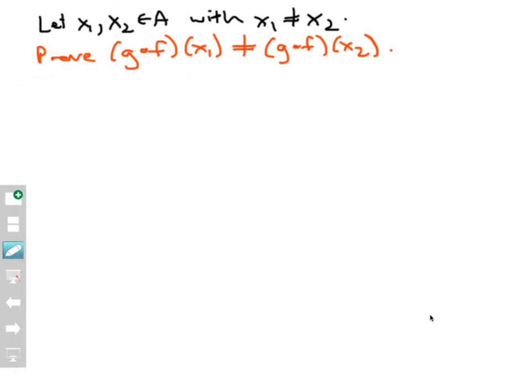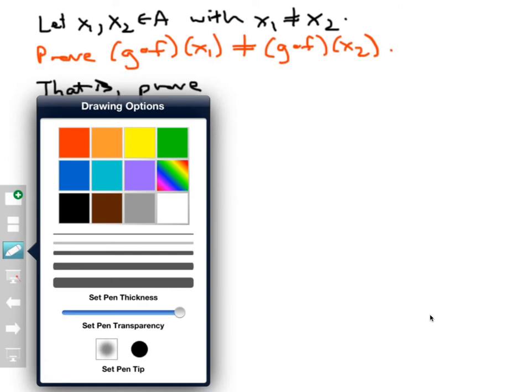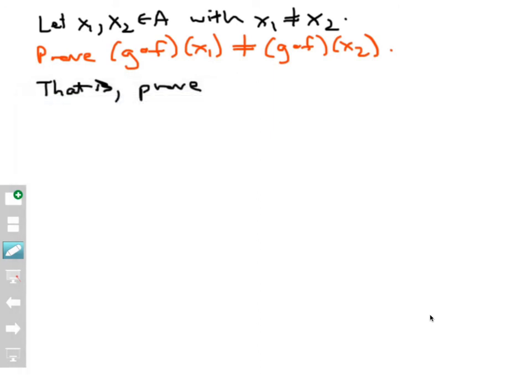Okay, one thing that we could possibly do here is sort of a backward step. So what does this stuff here actually mean? So I can interpret that to say that is, I want to prove, switch over to red again, what is g compose f of x1? That is the same thing as g of f of x1, and I want to show that's not equal to g of f of x2.